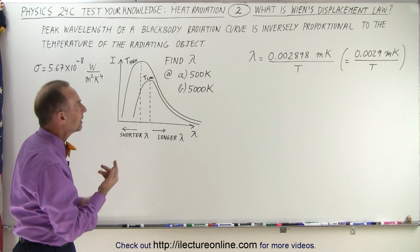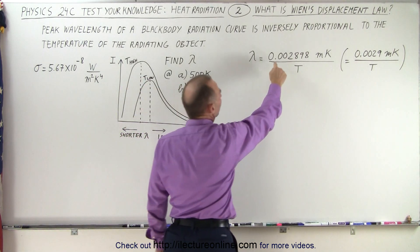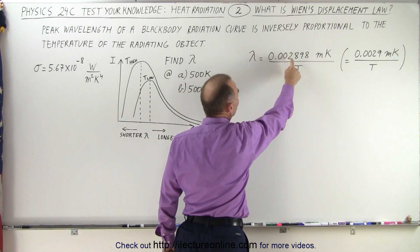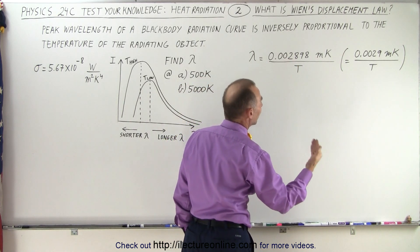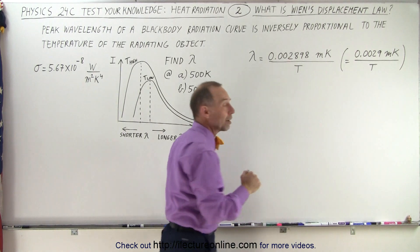If we want to find out what that is, we take the constant, which is 0.0002898 meter times Kelvin, divided by the temperature of the object in Kelvin.